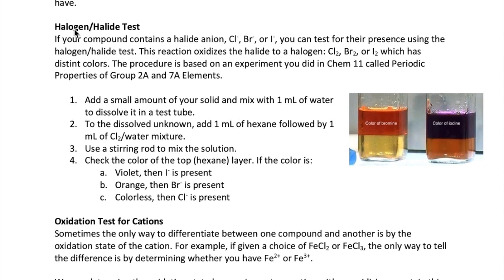Another useful test is something called a halogen halide test. This is used if your compound contains a halide anion, which is either chloride, bromide, or iodide. You can test for the presence of these ions by oxidizing them to the halogen form, which is chlorine, bromine, or iodine. These halogens happen to have unique colors, making them easy to identify. So the procedure for this test is from an experiment that you did in Chem 11.